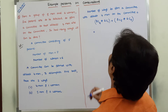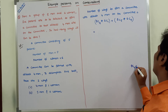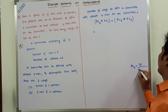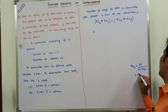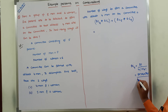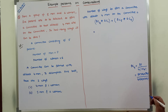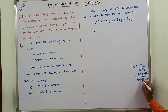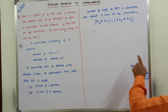Now we calculate 8C4 and 8C5. 8C4 equals 8 factorial divided by (4 factorial × 4 factorial), which gives 8×7×6×5 divided by (4×3×2×1). Simplifying: 4×2=8 cancels, 3×2=6 cancels, leaving 7×2=14, and 14×5=70. So 8C4 = 70.